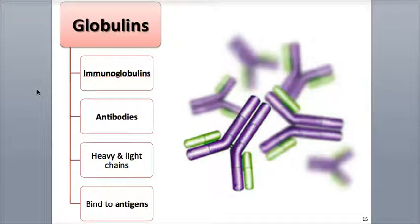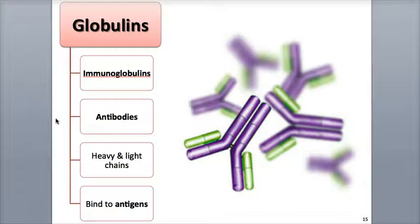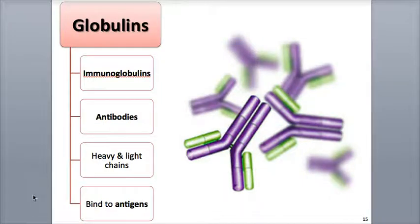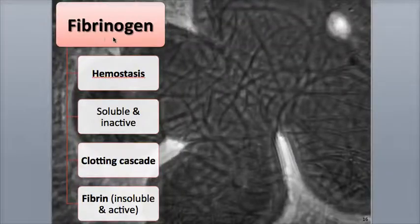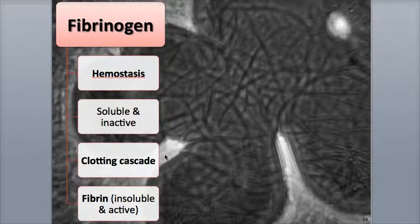The globulins make up 38% of the proteins. They are large proteins that include the immunoglobulins, also called antibodies — specialized immune system chemicals that destroy foreign substances called antigens, including viruses and bacteria. Other globulins called alpha and beta globulins are used to transport lipids and fat-soluble vitamins. They have a specialized structure consisting of heavy and light chain regions that helps them react specifically to their antigens.